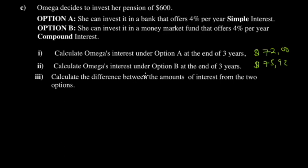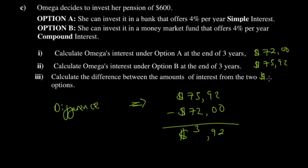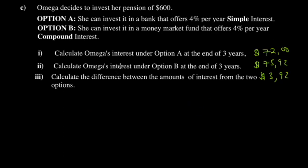Now calculate the difference between the amounts from the two options. Difference = 75.92 − 72.00 = $3.92. So your difference is $3.92. Which one would you rather go with? You'd go with compound interest — it's always better that way.